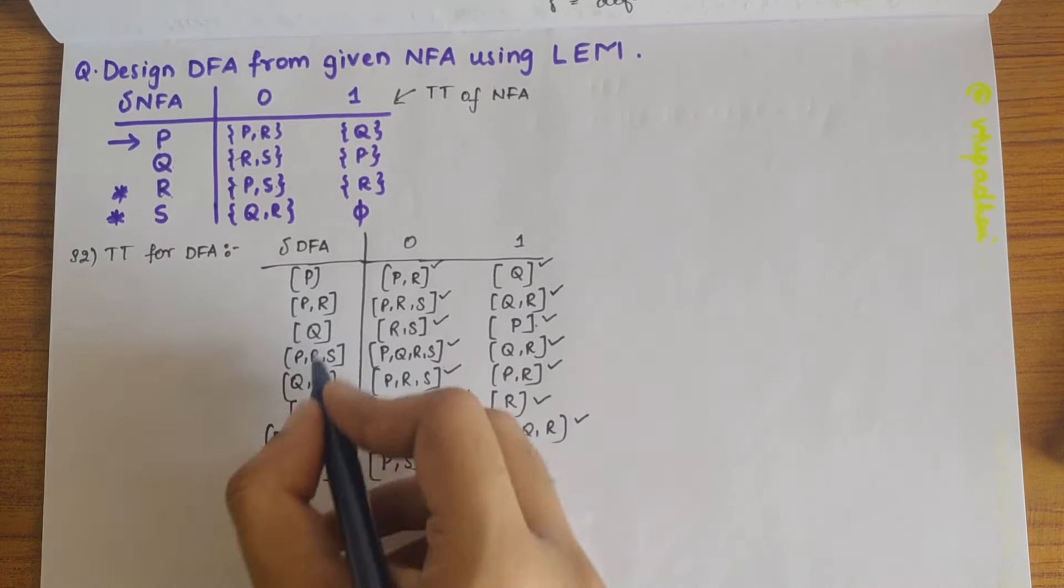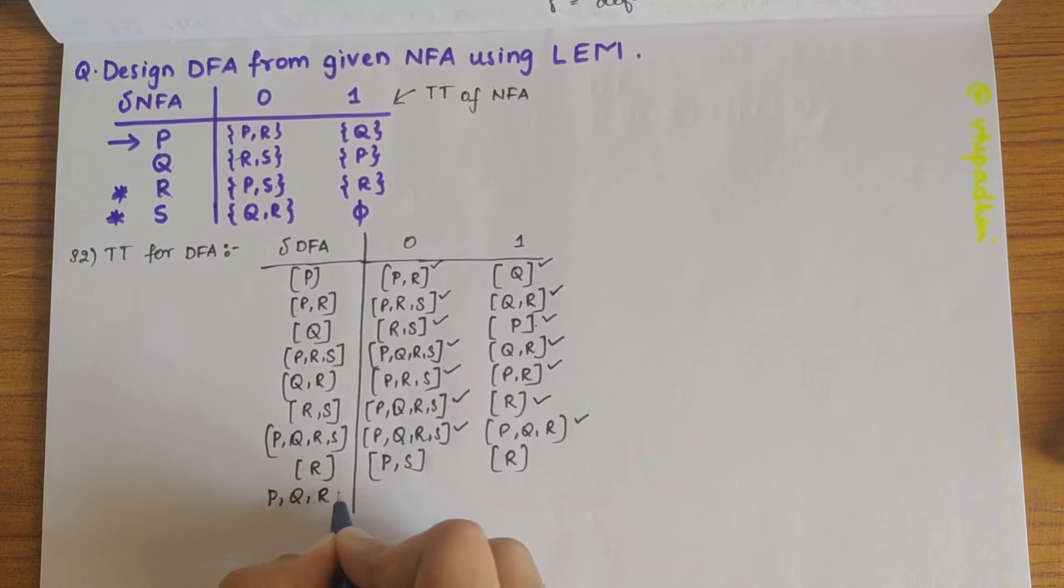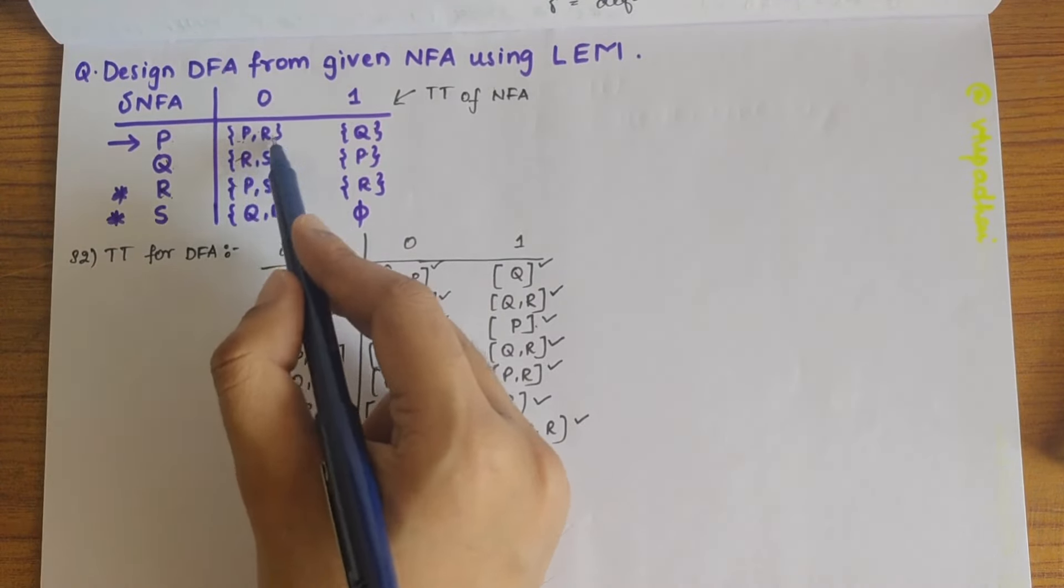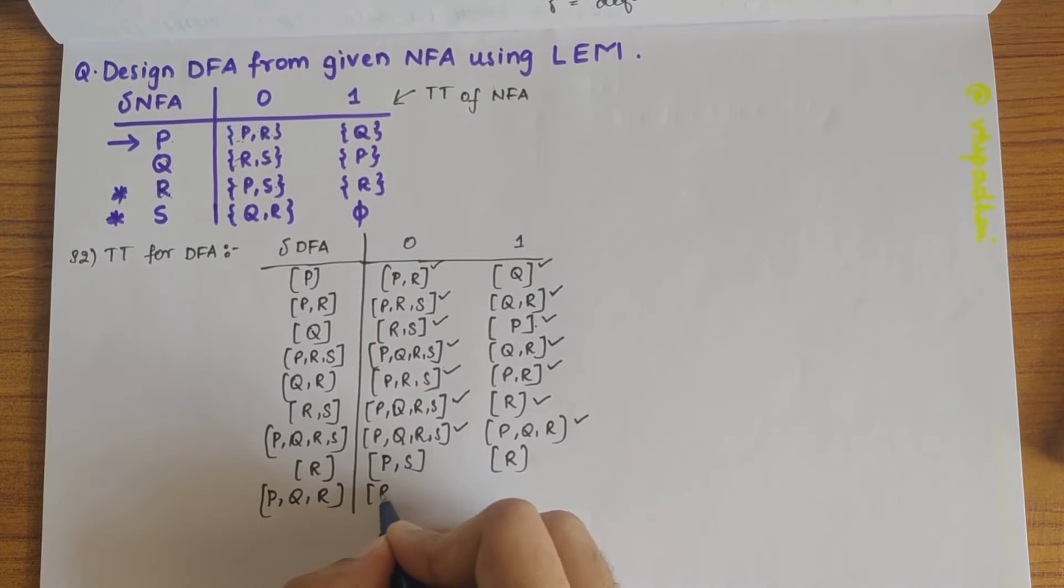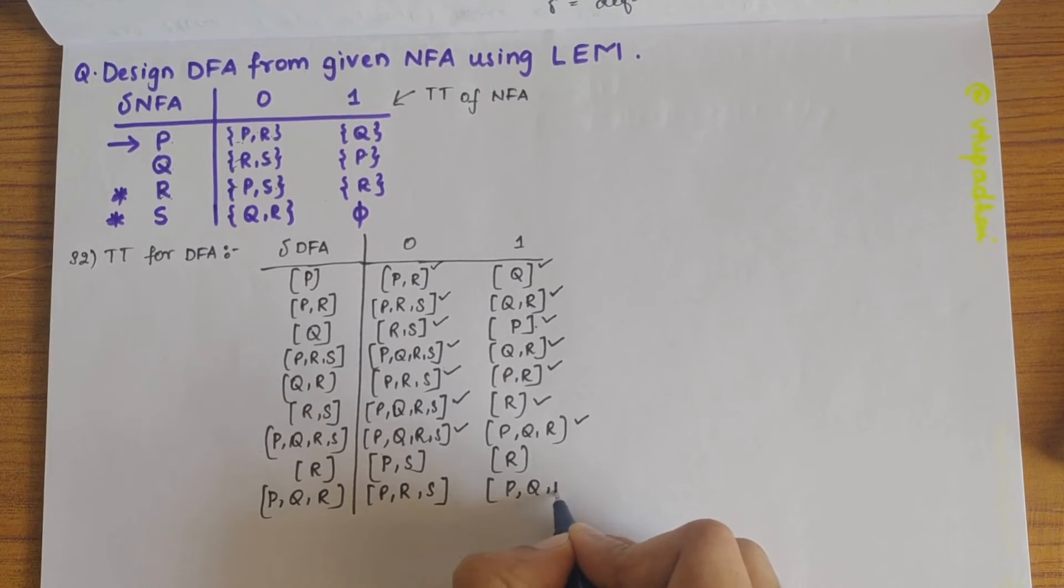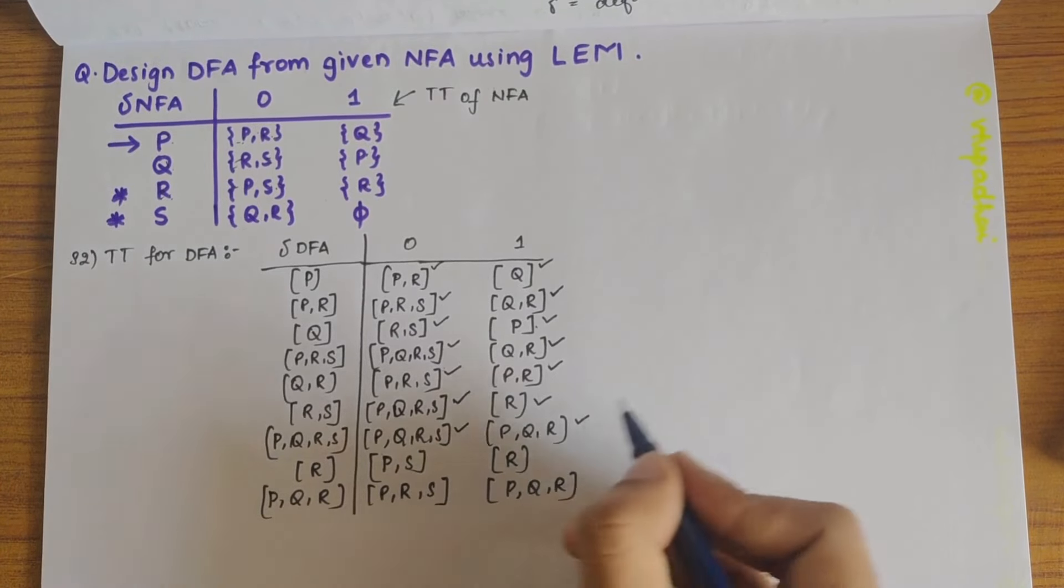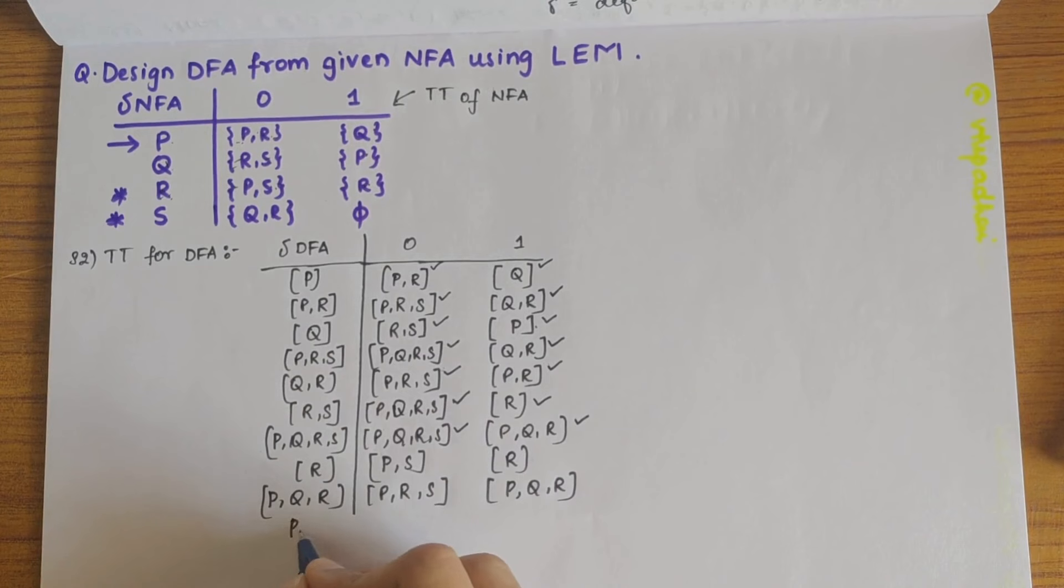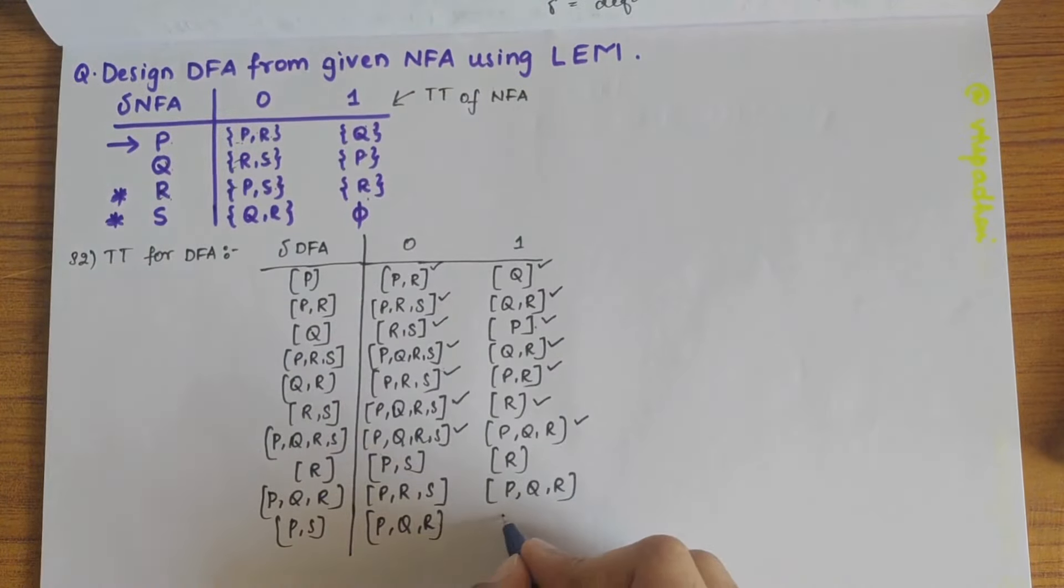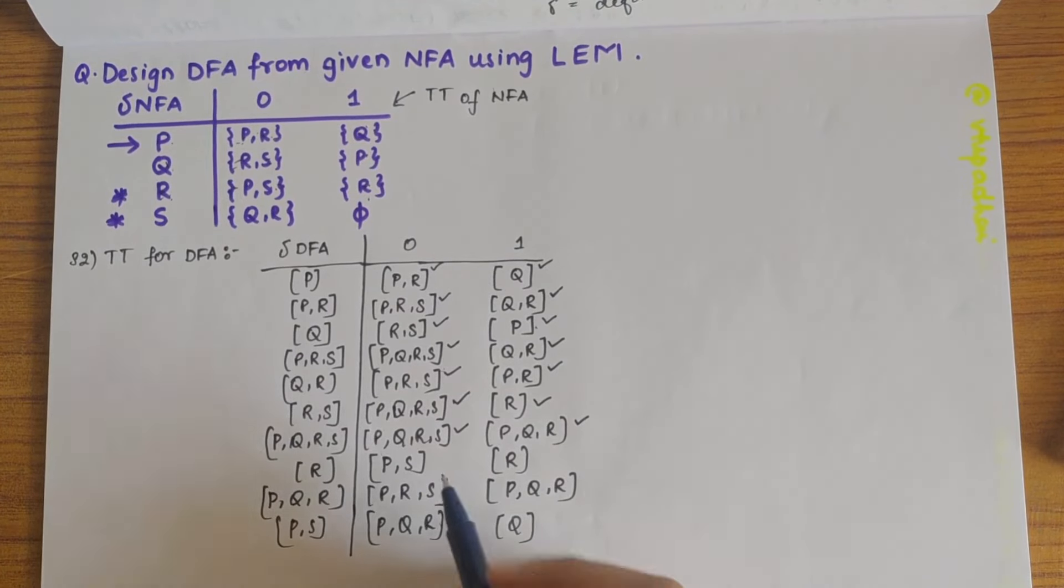PQRS is defined. PQR is not defined. So let's write PQR here. PQR on 0, we get PRRS and PS. That is PRS. And here we get PQR. So PQR is defined now. Is there PS here? No, PS state is not defined. So let's write PS here. PS on 0 gives PQR. And on this side PS. PS on 1 gives Q. So PS is defined.